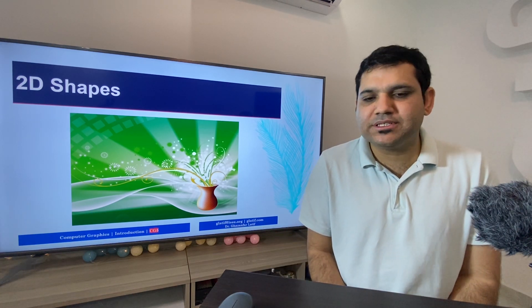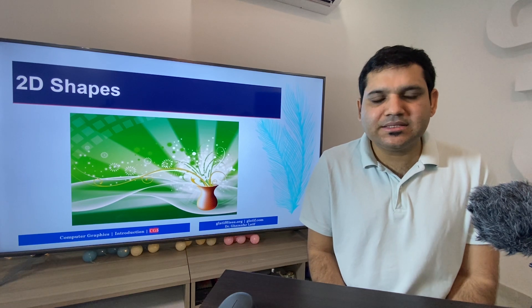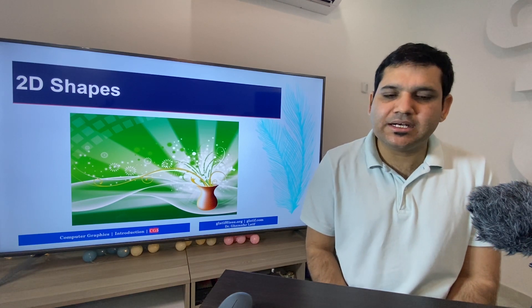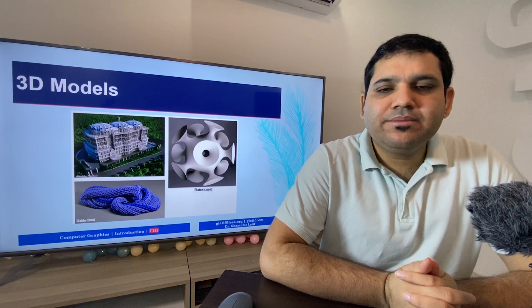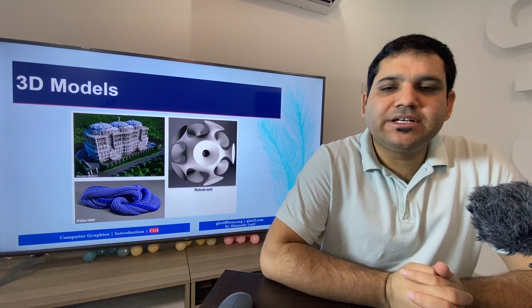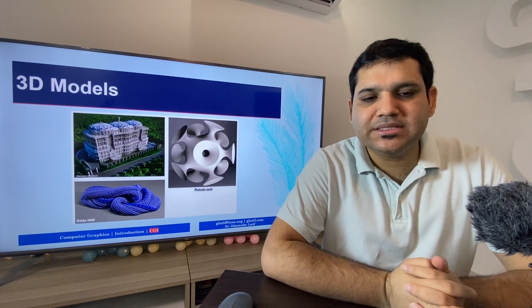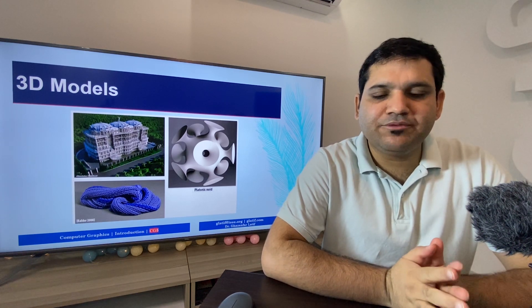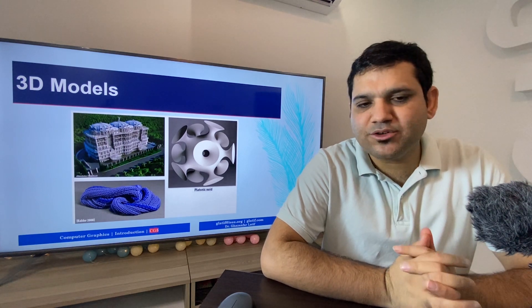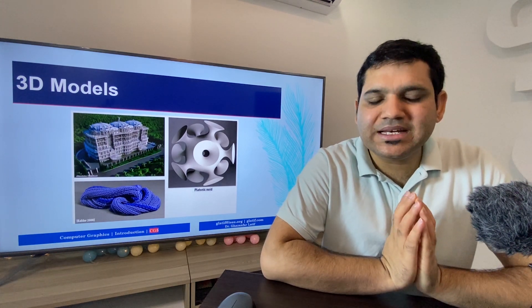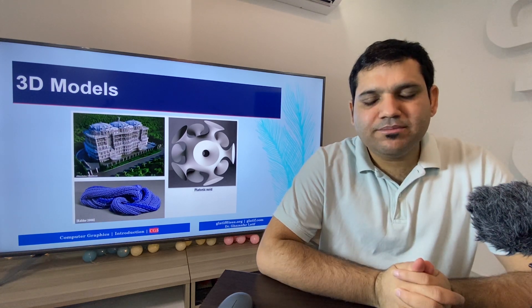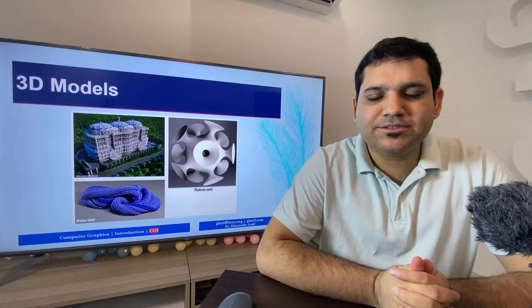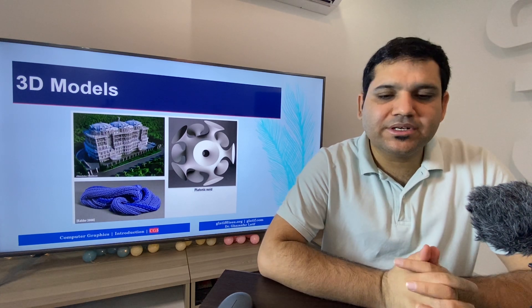As you can see, this image has been created using computer graphics and all the things appearing here are actually computer-based. 3D models are also generated using computer graphics with different properties and different sets of objects in different ways of representation. As you can see here, the model of the building has actually been made by computer graphics.